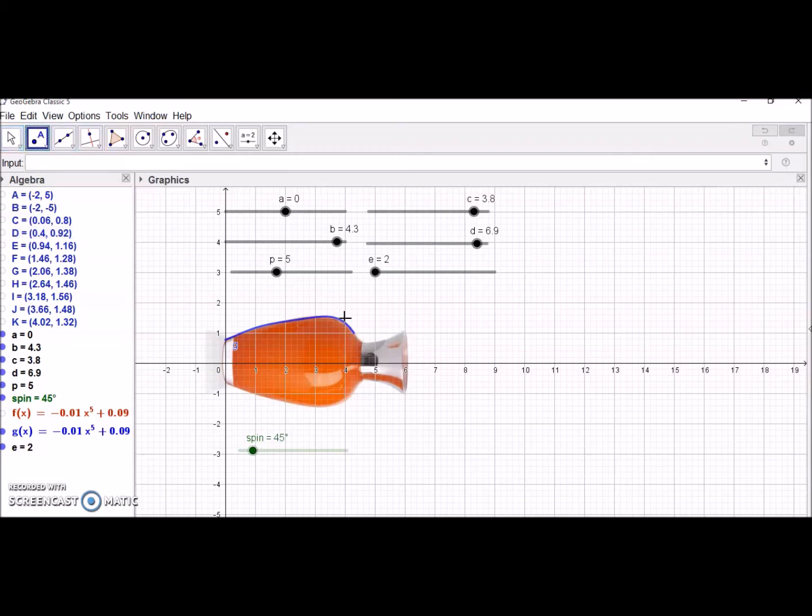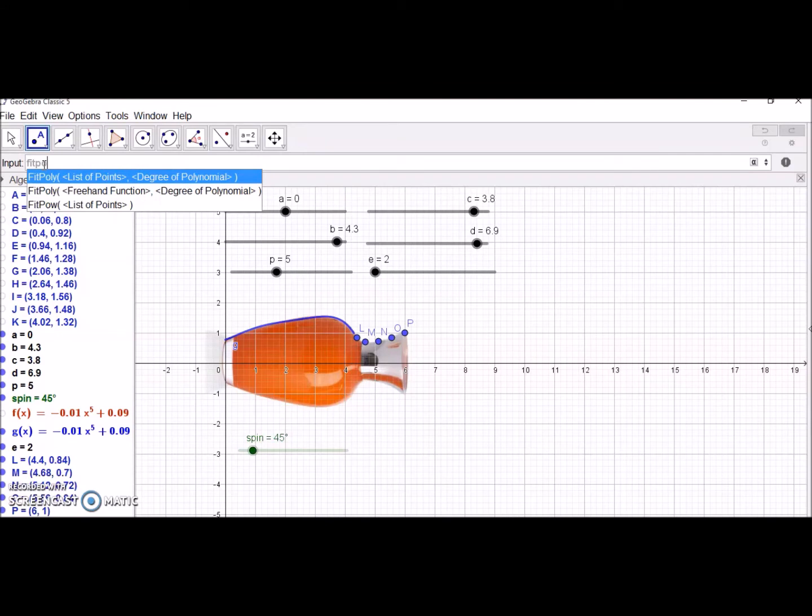Let's do the same for the second part. Put some points on its edge, three or four points will be enough. Then the same command fit poly. Remember when you type fit, it should appear automatically. It will give you a polynomial curve.